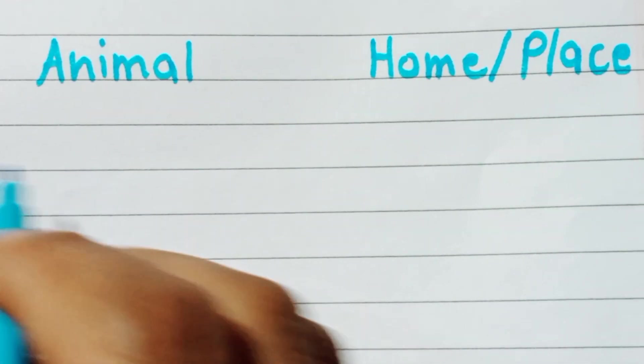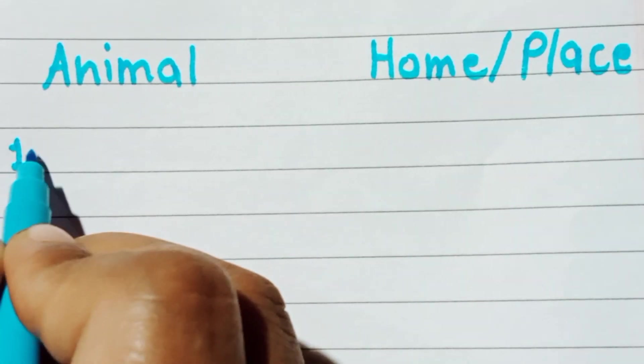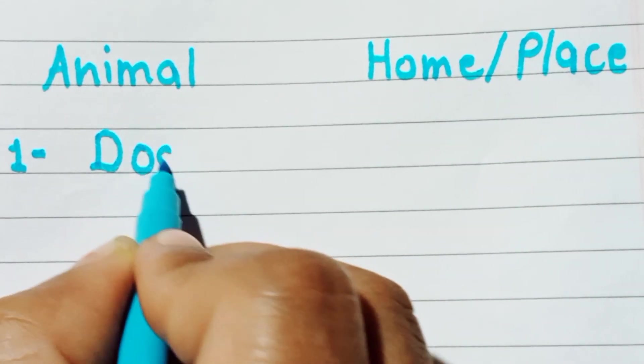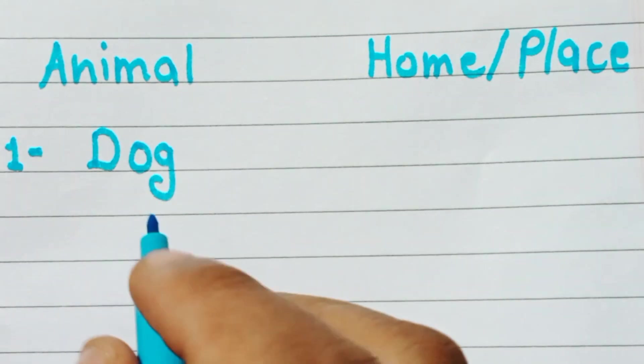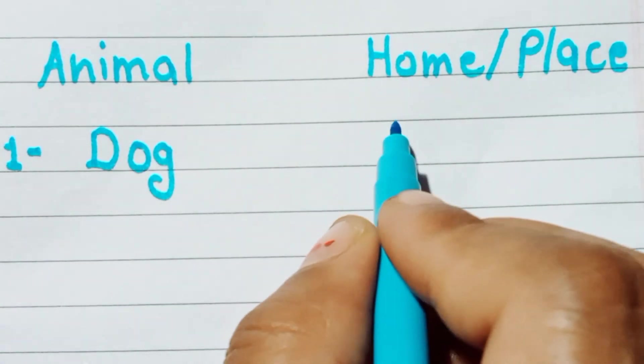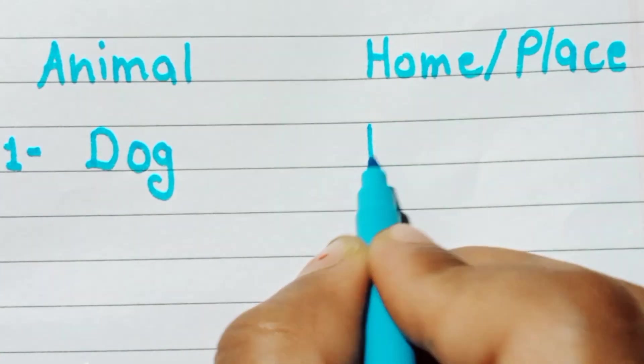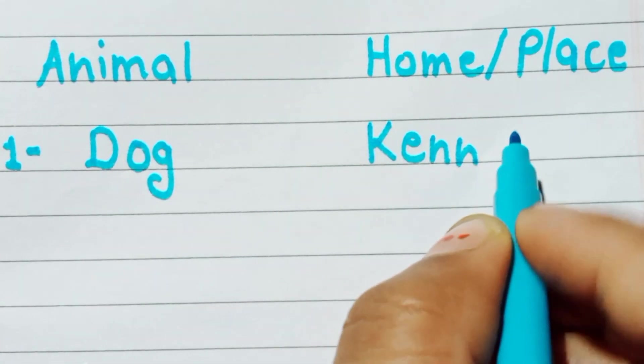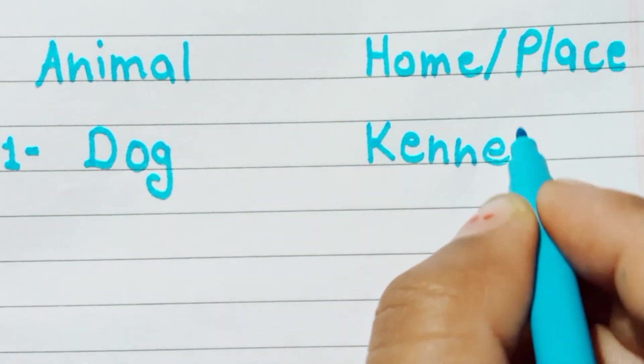Number one is dog, d o g. Dog means kutta. Dog home is kennel, k e n n e l.